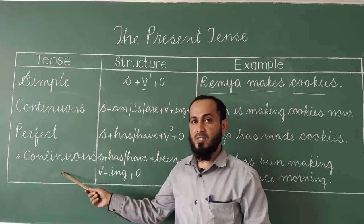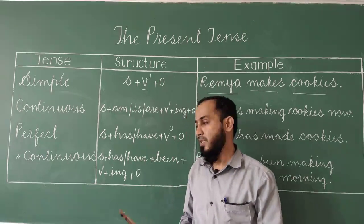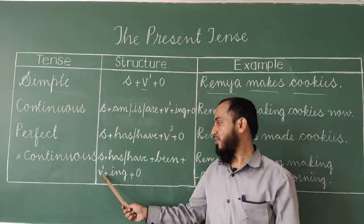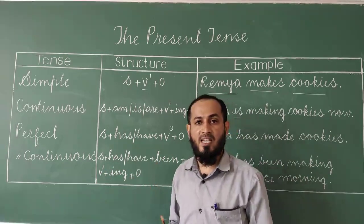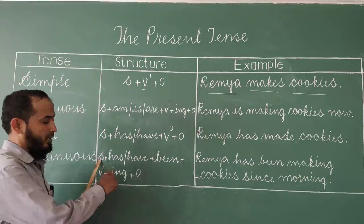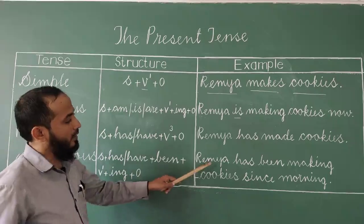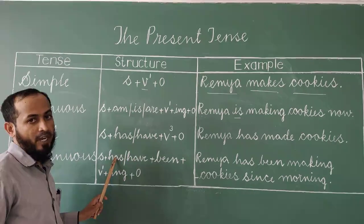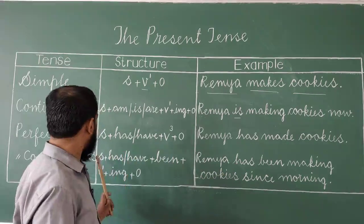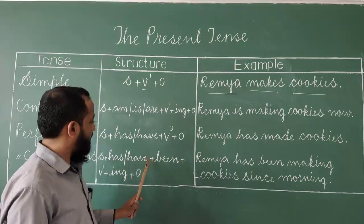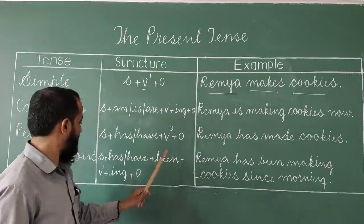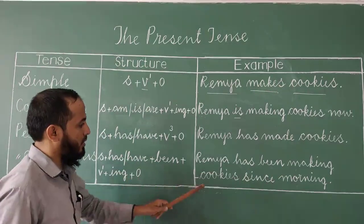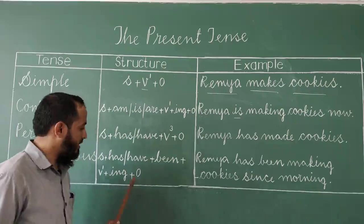For perfect continuous tense, the formula is: subject plus has or have plus been plus V1 plus ing plus object. For example, 'Remia has been making cookies since morning.' Remia is the subject, has been is used, making is V1 plus ing, and cookies since morning comes under the object.